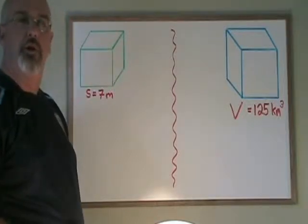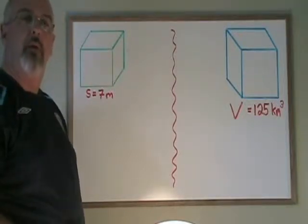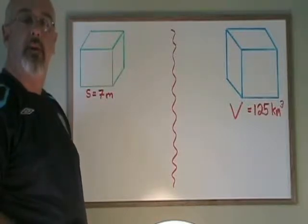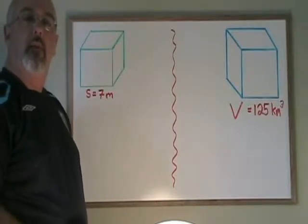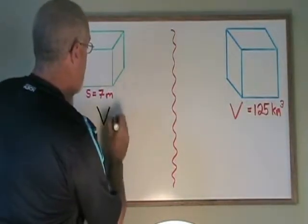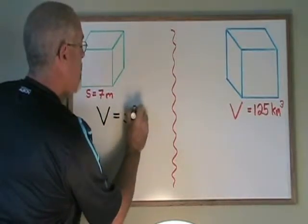When we are studying high school geometry, sometimes we are required to be able to use a formula to find the volume of a cube. The volume of a cube formula looks like this: V for volume equals s cubed.